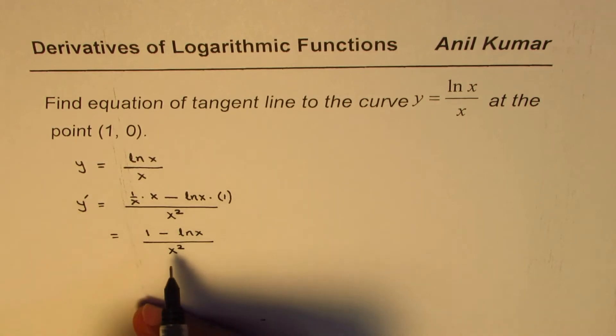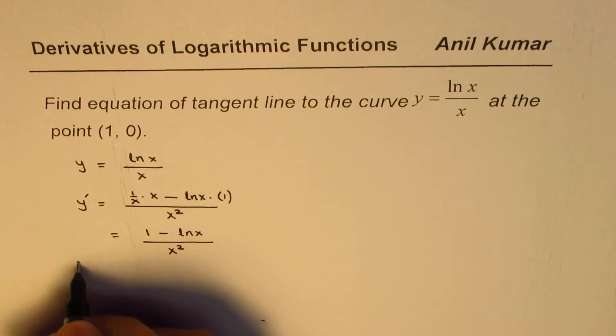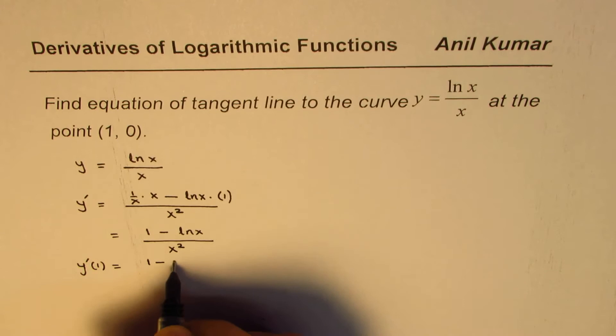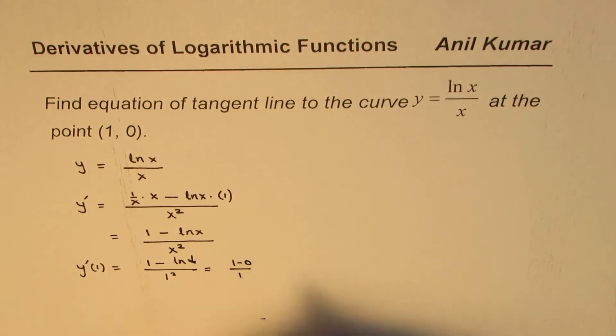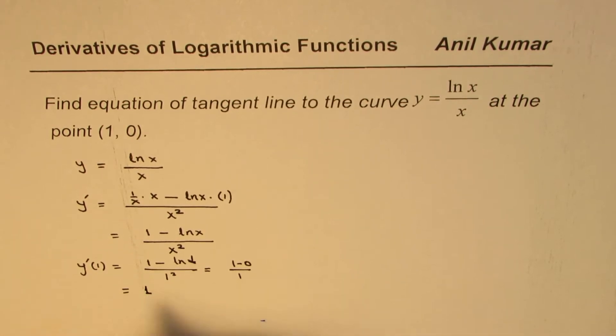Now what is the derivative at this point x equals to 1? Let's find that. So y prime at 1 is equals to 1 minus ln 1, I mean x is 1, over 1 squared. And ln 1 as you know is 0, so it is 1 minus 0 over 1. So the derivative at 1 is indeed 1.